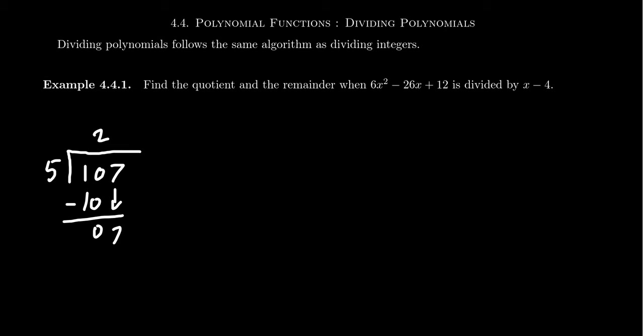Then we repeat the process. 5 goes into 7 exactly one time. We subtract from it 5. 7 minus 5 is 2. And 5 can't go into 2, 2 is too small. So we end up with this remainder of 2.